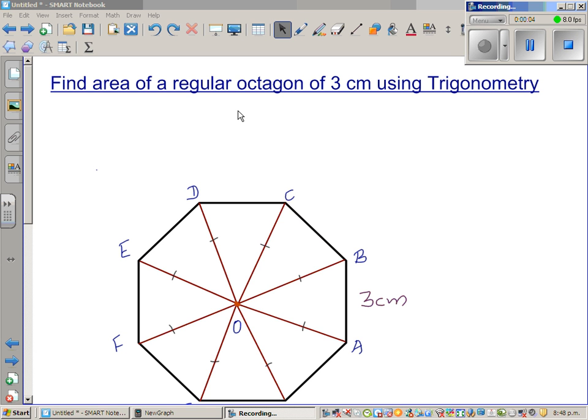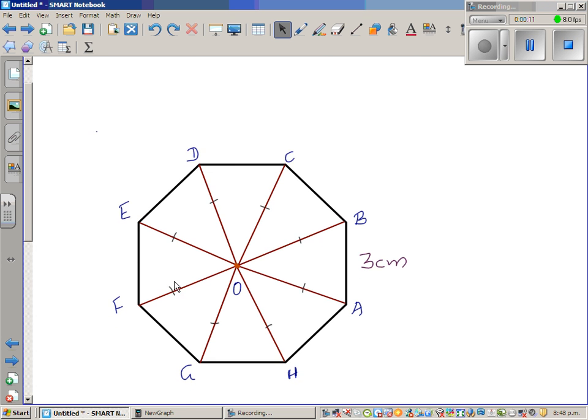Find the area of a regular octagon of 3 centimeters using trigonometry. Now this is octagon A, B, C, D, E, F, G, H of 3 centimeters.